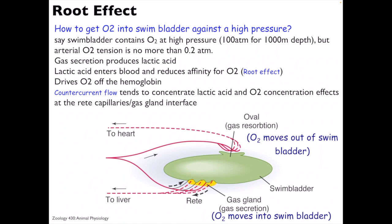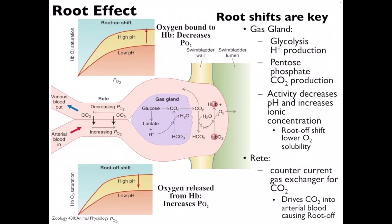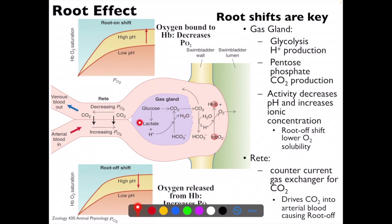Eventually the oxygen concentration builds up enough to finally diffuse into the swim bladder. Here is the arterial blood going in, around the gas gland, and then going out. In the gas gland, we have glycolysis and proton production, along with pentose phosphate CO2 production, which lowers the pH and increases ionic concentration. The rete is a capillary bed where countercurrent exchange happens — a countercurrent exchanger for CO2.